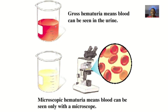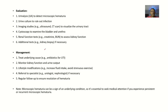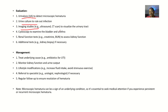To recap: gross hematuria means blood can be seen in urine; microscopic hematuria means blood can only be seen with the aid of a microscope. For evaluation, you can suspect microscopic hematuria on urinalysis. You can also do a urine culture to rule out infections.